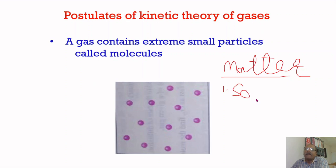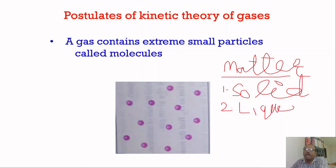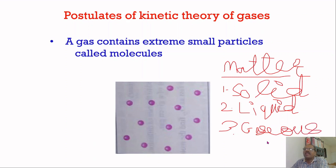The three classifications of matter are: first, solid matter; second, liquid matter; and third, gaseous matter. Solid matter includes things like a table, chair, chalk piece, and so on. Liquid matter includes water, milk, kerosene, petrol, oil, and so on. Gases include hydrogen gas, chlorine gas, and other gas mixtures.